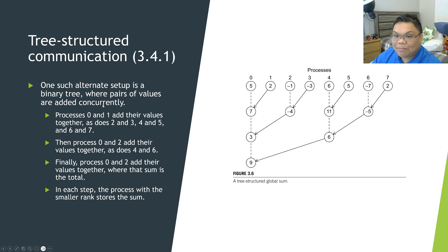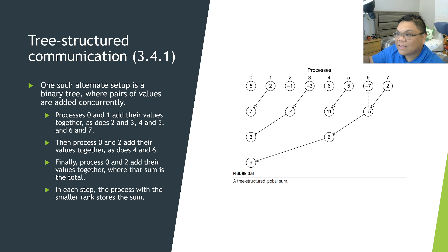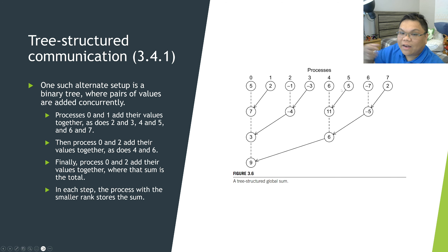This is a setup where the values are added in a binary tree. In our example of the trapezoid rule, we are calculating the area under a curve — a really funky curve, so parts of the areas are negative. That task of finding the area is divided among eight processes, and they each have their own local areas: 5, 2, -1, -3, 6, 5, -7, and -2.